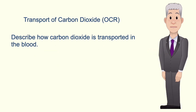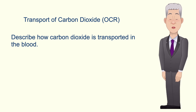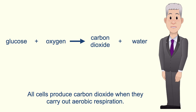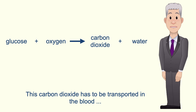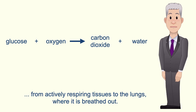Hi and welcome back to Free Science Lessons. By the end of this video you should be able to describe how carbon dioxide is transported in the blood, and this is for the OCR spec only. All cells produce carbon dioxide when they carry out aerobic respiration, and this carbon dioxide has to be transported in the blood from actively respiring tissues to the lungs where it's breathed out.